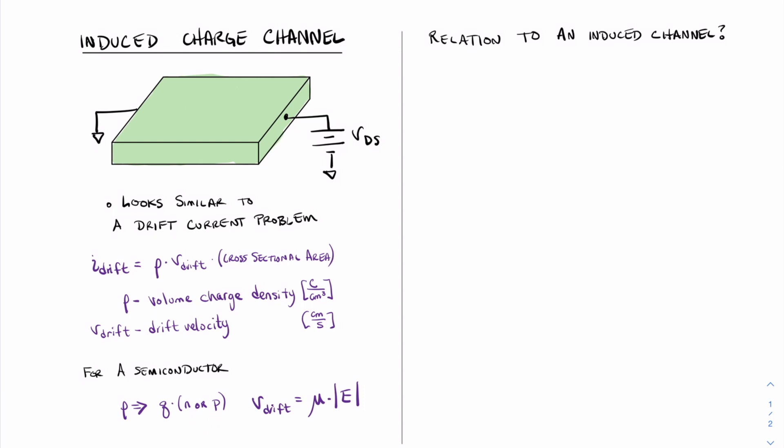For drift velocity, we can think of the drift velocity as being the multiplication of the electric field and the mobility of those carriers.